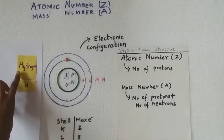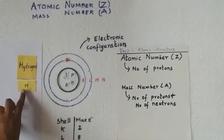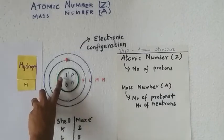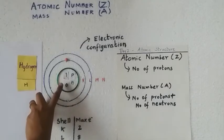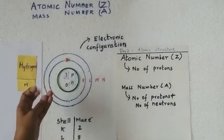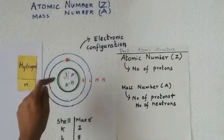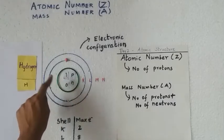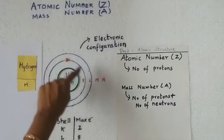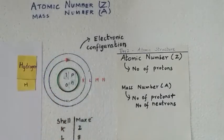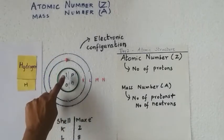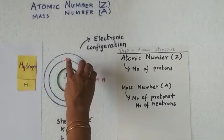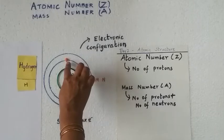The first element, hydrogen, has only one proton and no neutrons. Recall the subatomic particles: protons and neutrons are present in the center, which is called the nucleus. The electrons are the negatively charged particles which revolve around the nucleus in an orbit. The number of protons is always equal to the number of electrons.